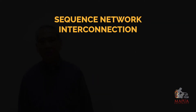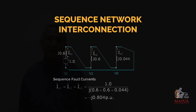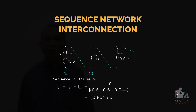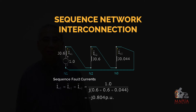Now for the interconnection of these three sequence networks for the single line to ground fault, the currents IA1, IA2, and IA0 are equal based on our computation, and the interconnection is in series. So IA0 = IA1 = IA2 = 1.0 divided by the sum of the sequence reactances: 0.6 + 0.6 + 0.044, giving a magnitude of -j0.804 per unit. These are the sequence fault currents flowing through the faulted point.